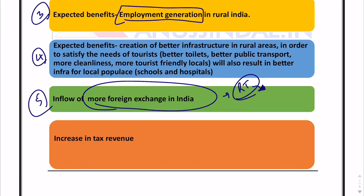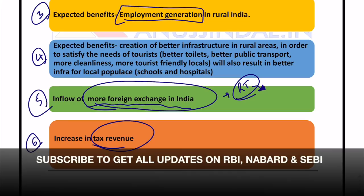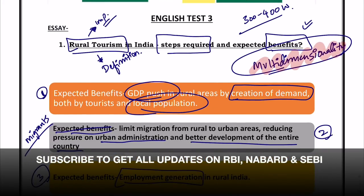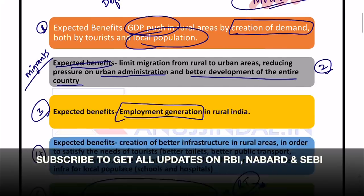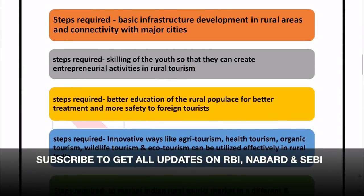People from advanced countries want to explore India the way India truly is. As Mahatma Gandhi said, India lives in its villages — why not make that a strength rather than keep it as a liability? That can result in a lot of foreign exchange inflow. The sixth benefit is an increase in tax revenue: as incomes of people increase, the tax base will automatically grow. I have discussed all these benefits from multiple dimensions — economic, social, infrastructure, tax, and foreign exchange — not from a single dimension.